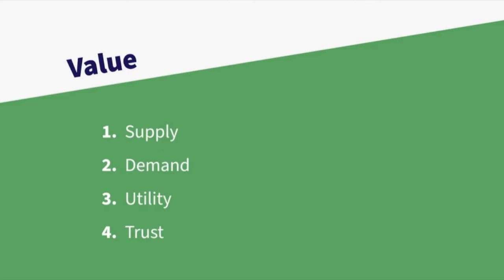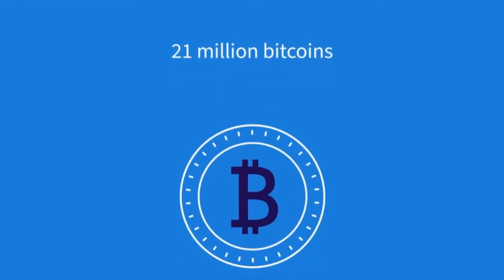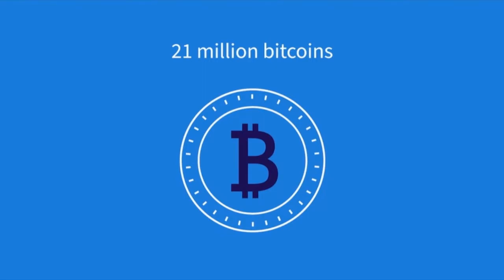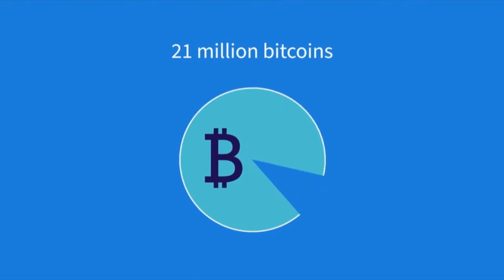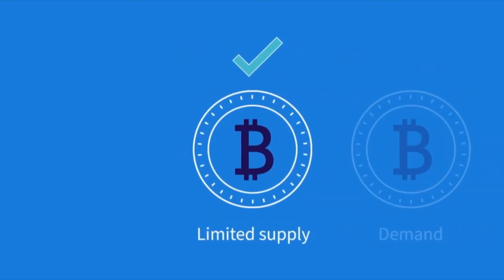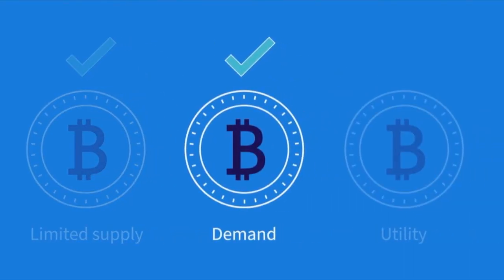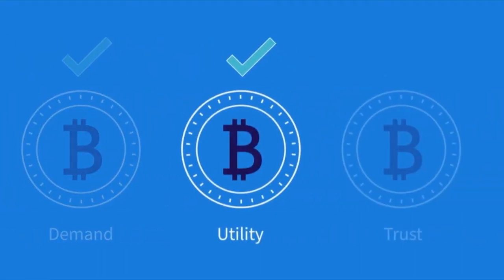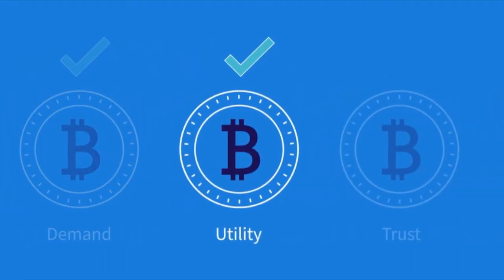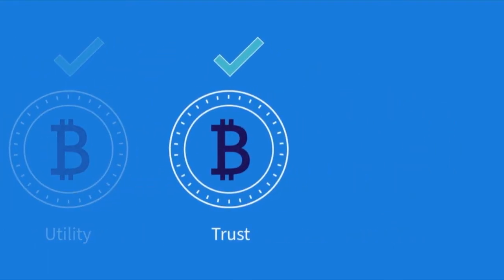Utility means it can be used to buy and sell products and services. Trust means having confidence that it will store value and be accepted for transactions. When bitcoin was launched in 2009, a finite number of 21 million bitcoins was established. These bitcoins are introduced gradually via a process of mining. As time passes, mining is becoming increasingly difficult and costly, much like harvesting silver, gold, or oil. Bitcoin therefore has limited supply, a cost to mine, and a demand relative to its market value. Bitcoin can absolutely be used to buy all types of products and services, meaning it has utility.